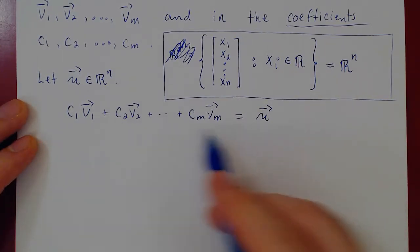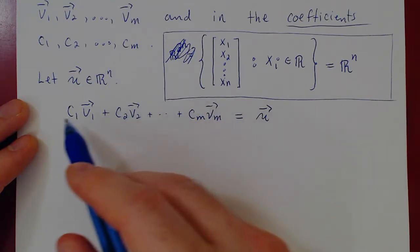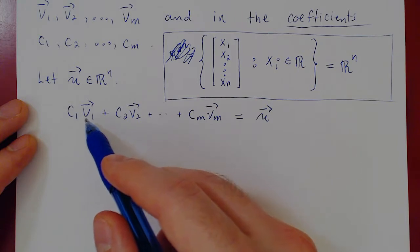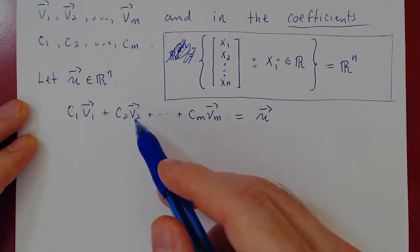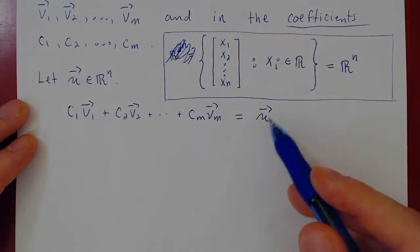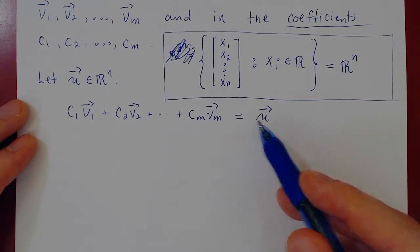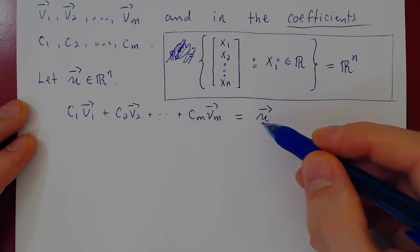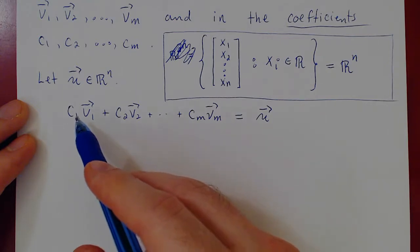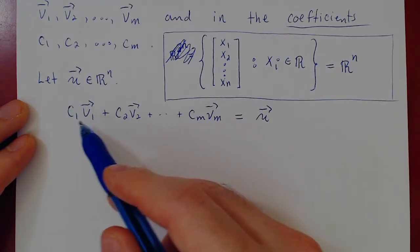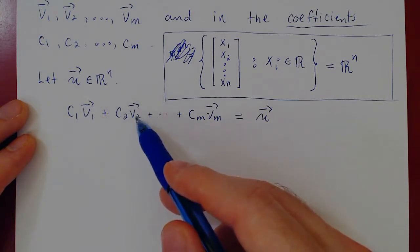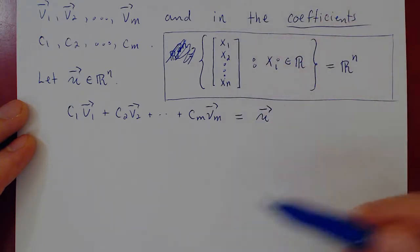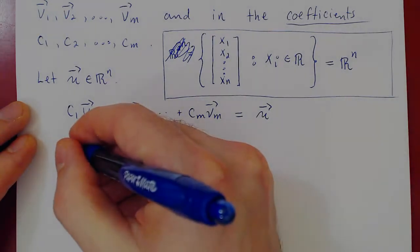Think of the first entry of the combined vector: c1 times the first entry of v1, plus c2 times the first entry of v2, up to cm times the first entry of vm, equals the first entry of u. That's a linear equation in the coefficients c1 through cm. Then look at the second row: c1 times the second entry of v1, plus c2 times the second entry of v2, up to cm times the second entry of vm, equals the second entry of u.